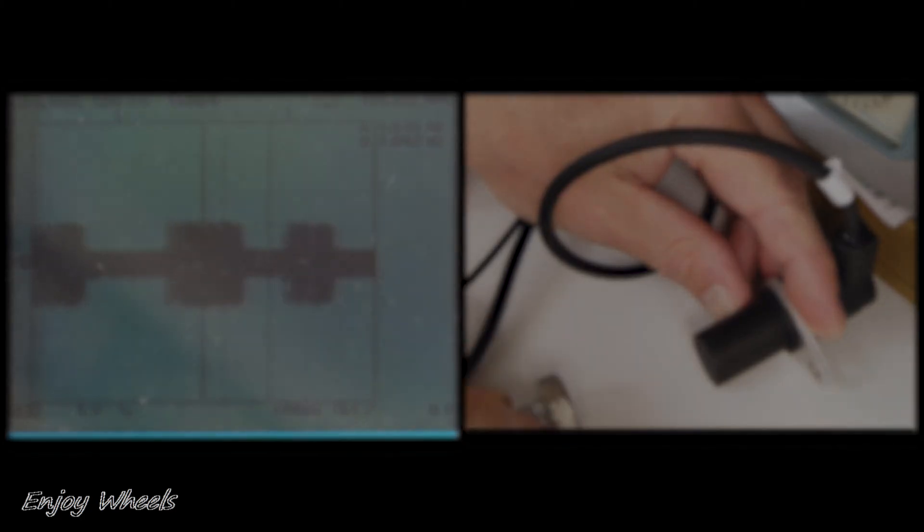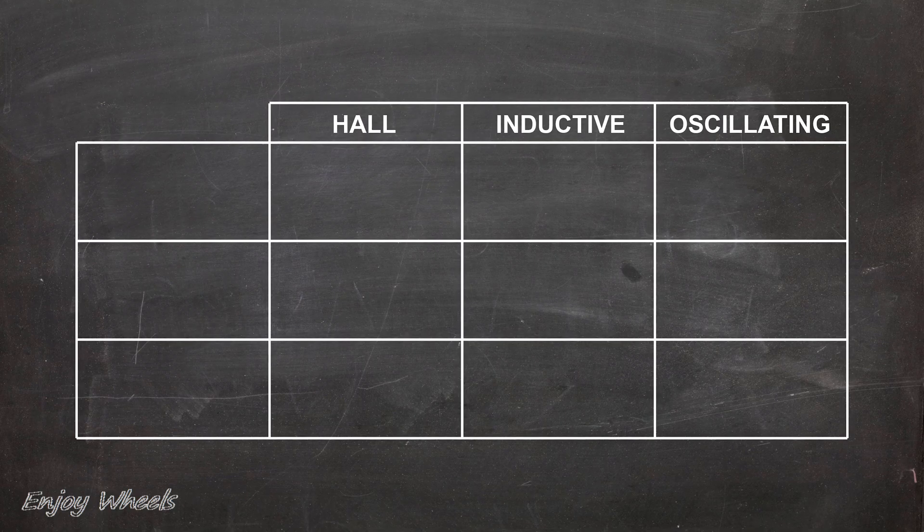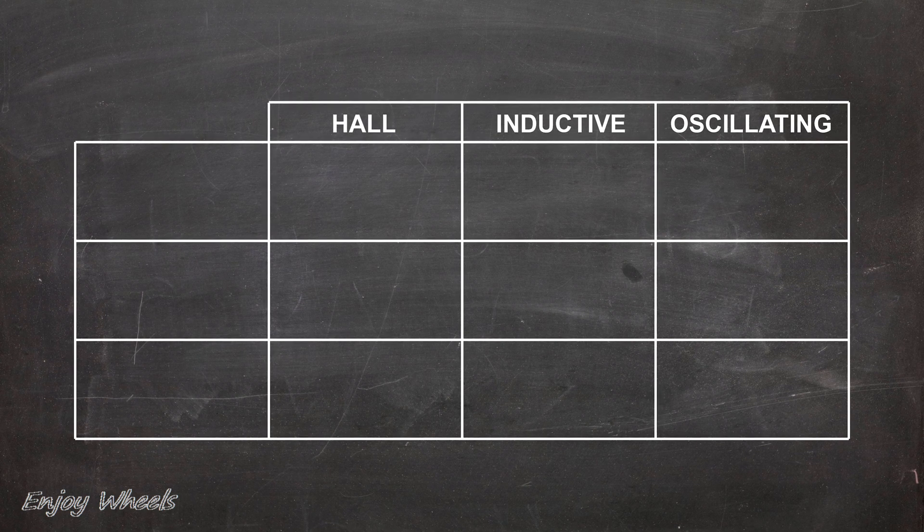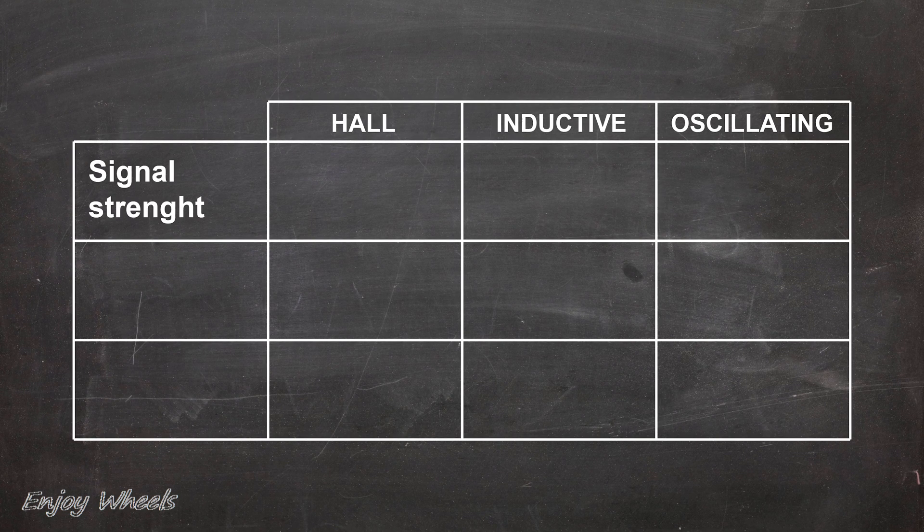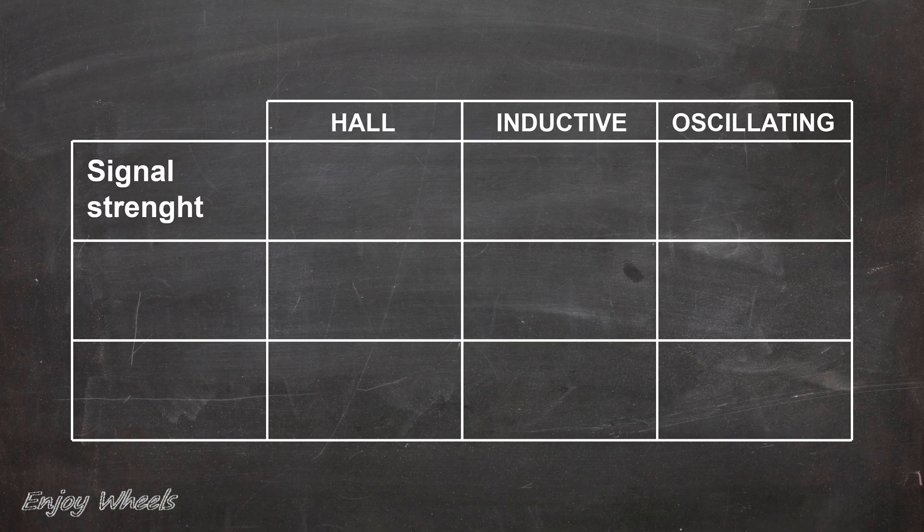Now what we can ask is why there are different types of sensors when they are used to do exactly the same thing. For that, I made you a small comparative table between the different types of sensors. So first, let's look at the signal output strength of the various sensors.